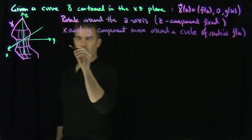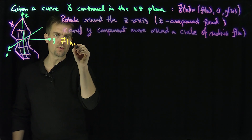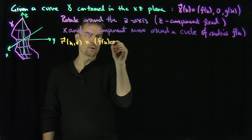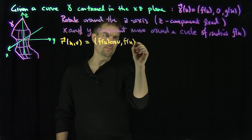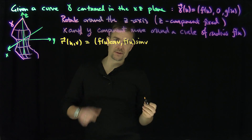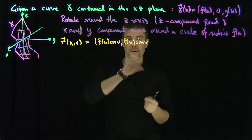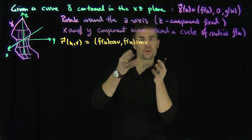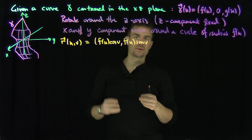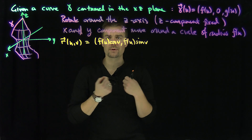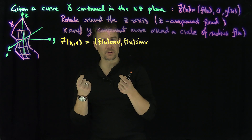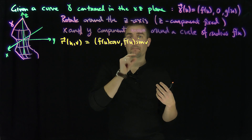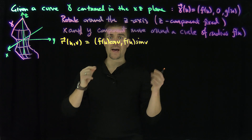Therefore our surface is parametrized as r(u, v) = (f(u)cos(v), f(u)sin(v), g(u)). If you don't like this parametrization, you can flip the sine and cosine — that reverses the orientation of the rotation. There are lots of modifications that will change the first and second fundamental forms and normal vector up to a plus or minus sign.